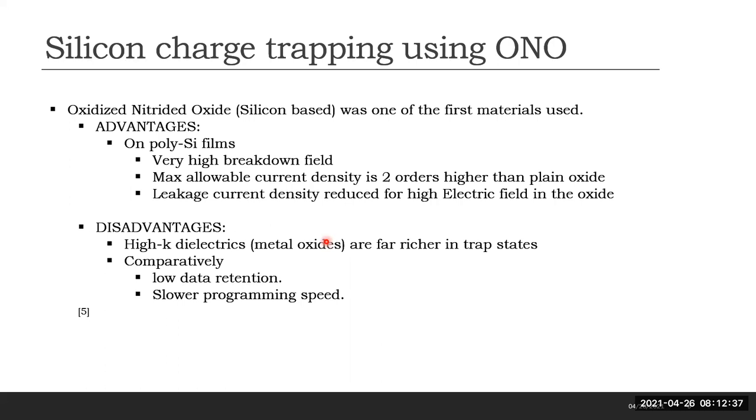While the silicon-based ONO stack was one of the first materials used to achieve this, its advantages related to polysilicon were a very high breakdown field, a maximum current density two orders higher than just silicon dioxide, and reduced current leakage at high values of the oxide electric field. The disadvantages are a lower charge trap state density, lower data retention capability, and a slower programming speed when compared to high-K metal oxides.